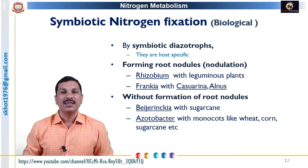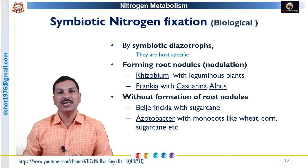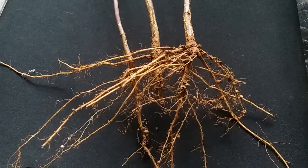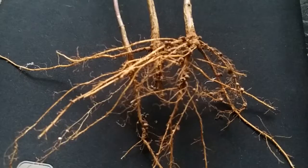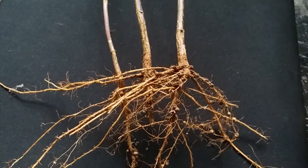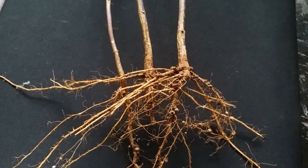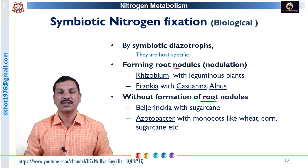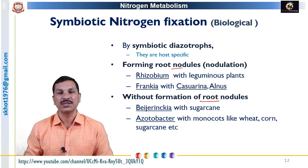The diazotroph forms associations in two forms. In certain cases, the association results in the formation of root nodules, so nodulation is present. In some other cases, there is no formation of root nodules, so the association is without nodules.